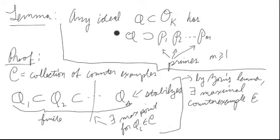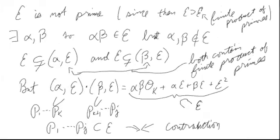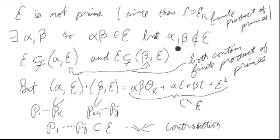If any ideal contains E non-trivially, it's out of C and actually contains a product of primes. Now, E is not prime — because if it were, it would contain itself, which is a product of primes. Since E is not prime, there exist alpha and beta such that their product is in E, but neither alpha nor beta is in E. That's the defining failure of the prime property.